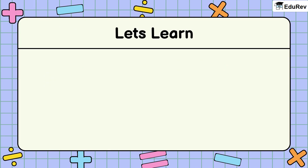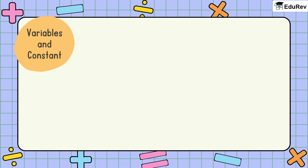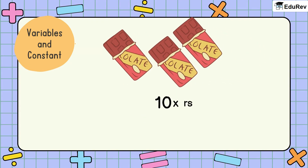Before learning how to solve a linear equation in one variable, we will first learn about what are variables, constants, algebraic terms, algebraic expressions, and algebraic equations. With the help of a simple example, let us first understand what are variables and constants. Suppose you want to buy X number of chocolates and each chocolate costs 10 rupees. Then the total amount of money you need to buy X chocolates will be 10 times X, or simply 10X rupees.